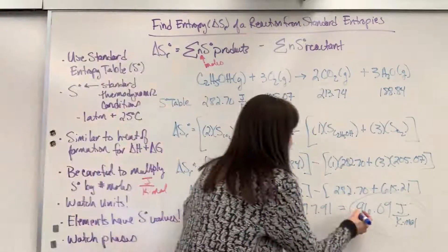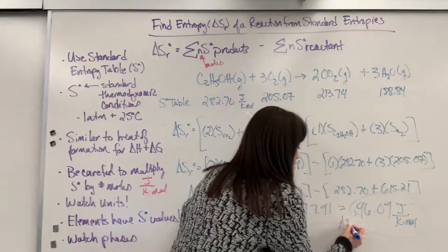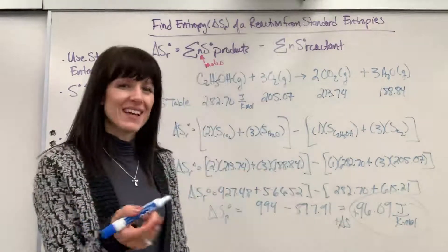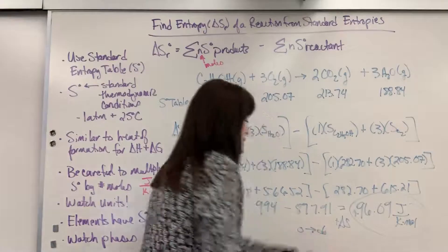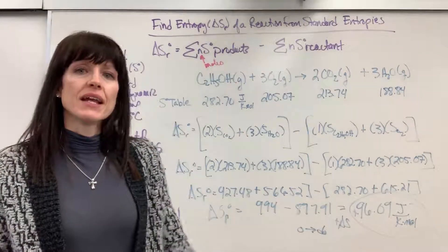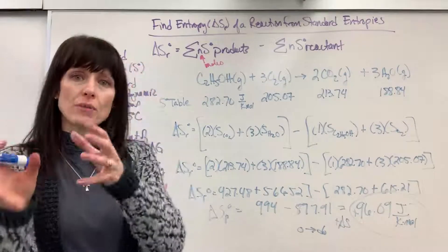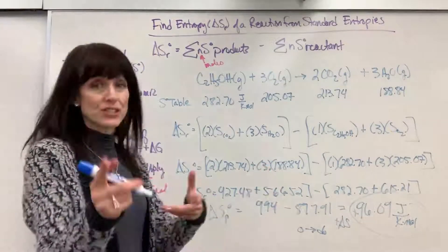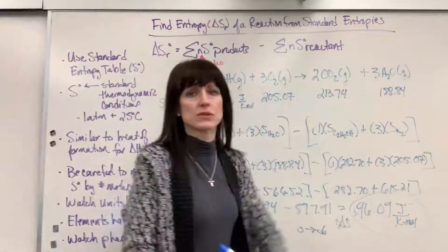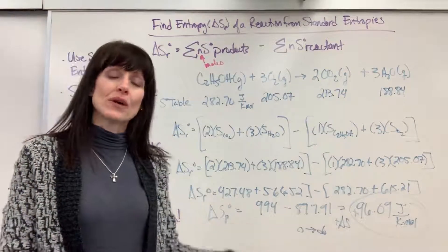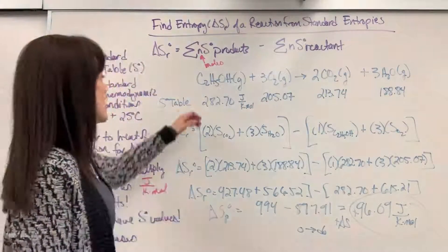Notice the sign on it. It's positive. So what does a positive delta S tell us? It is going from order to disorder. It tells us it's spontaneous, and anything that's spontaneous in entropy is going from order to disorder. Let's check that. If I were to predict this, notice I have all gas phases, so I can't look at phases. So now I'm going to look at the number of moles. I've got 1, 2, 3, so 4 moles here.